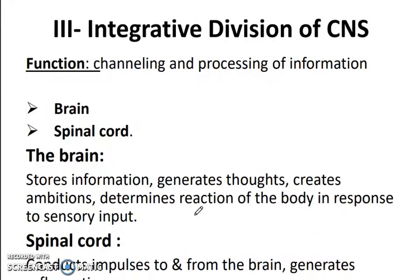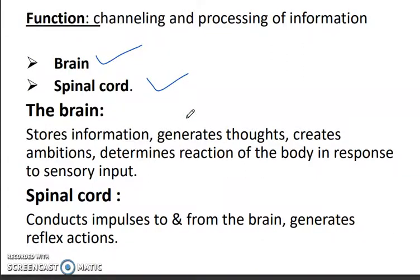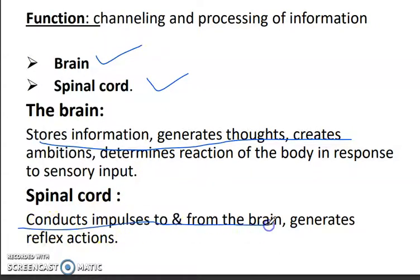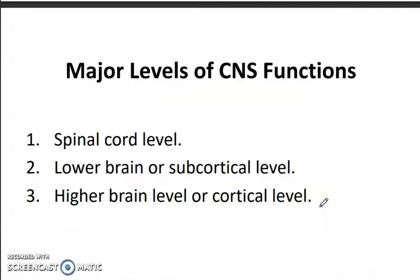The integrative division of the central nervous system includes the brain and spinal cord. The brain controls and stores information, generates thoughts and emotions. The spinal cord conducts impulses to inform the brain and generates reflex actions.